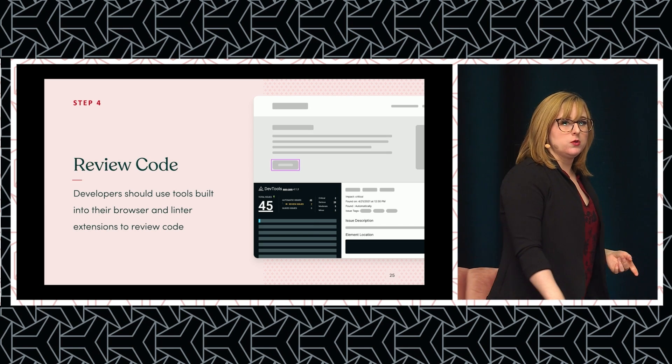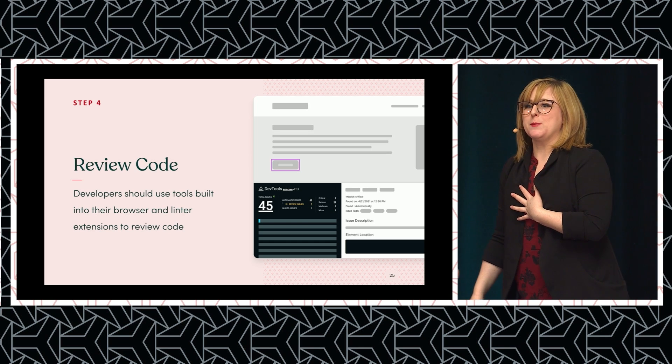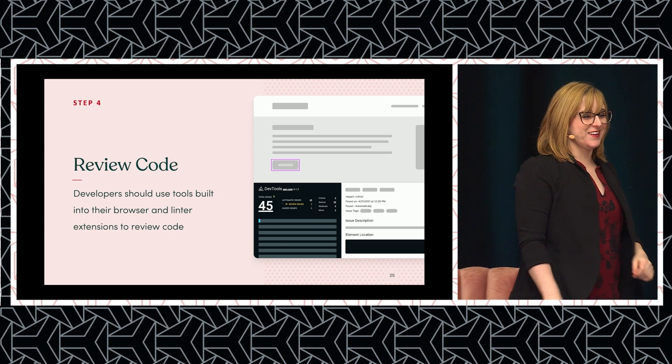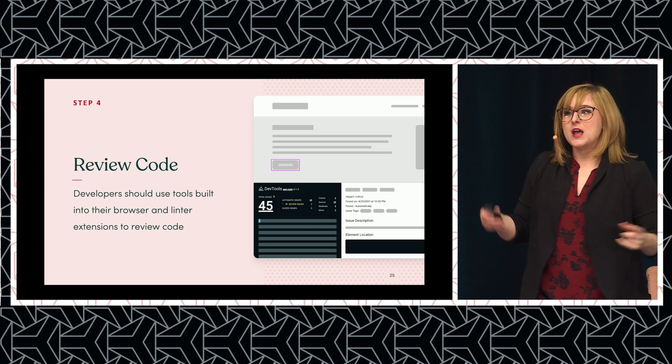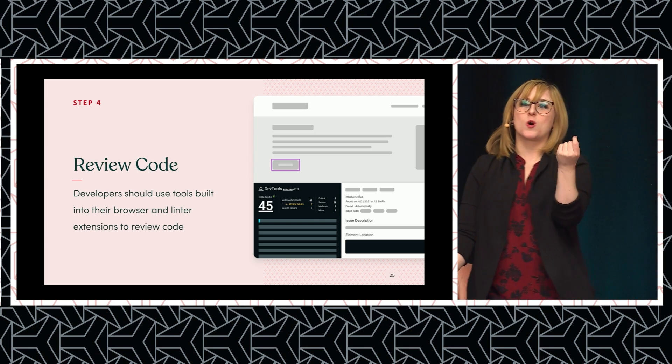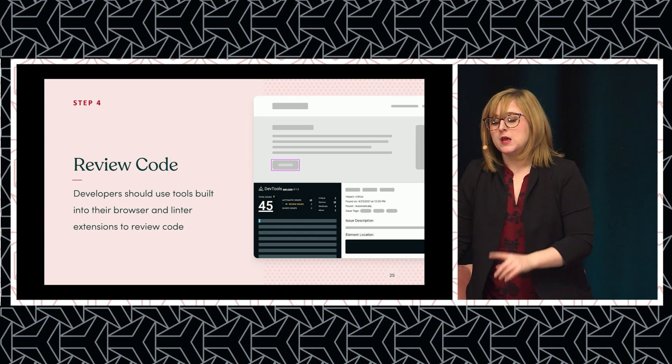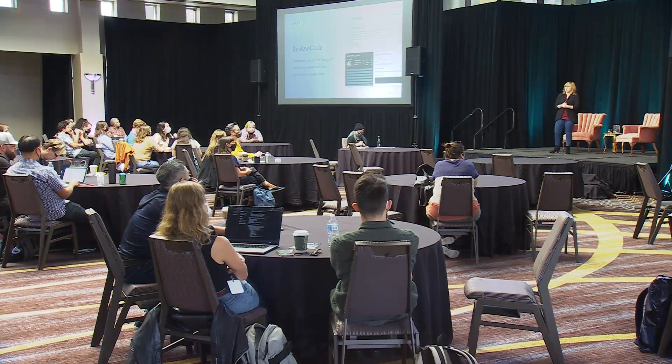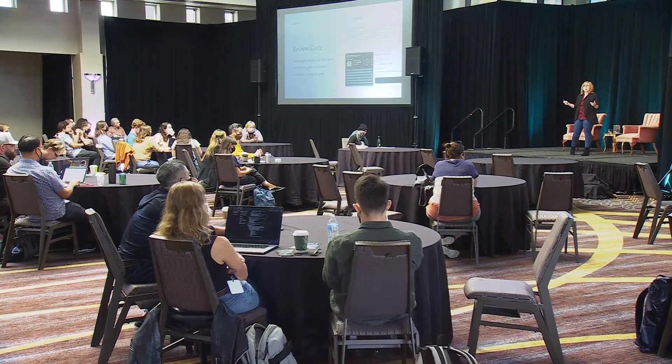The next thing we have to do is review code. I'm not a developer by trade — I am in a front-end class this semester. Developers can use automated tools like Axe from DQ, or these days your browser has accessibility review capabilities built in, anywhere, for free. There are also linter tools that can review code accessibility. I recommend Axe because you can export on a component-by-component basis, which is helpful for our system.